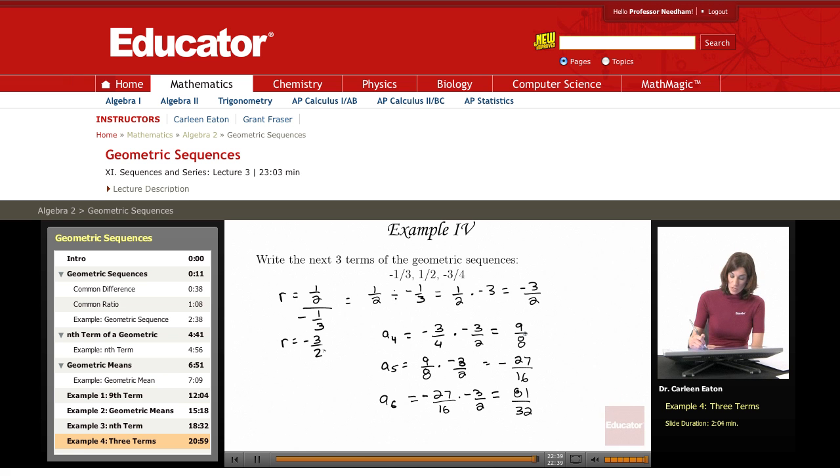So the next three terms are nine-eighths, negative 27-sixteenths, and 81 over 32. And I could have looked here and just predicted that the common ratio is negative because I have these alternating signs: negative, positive, negative.